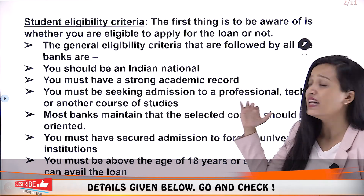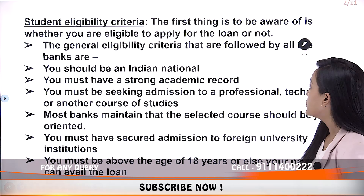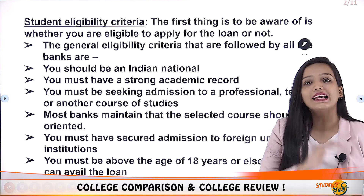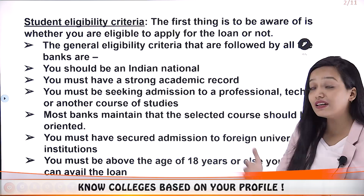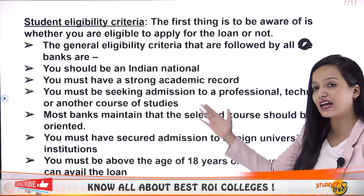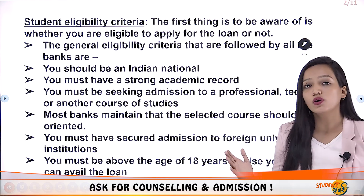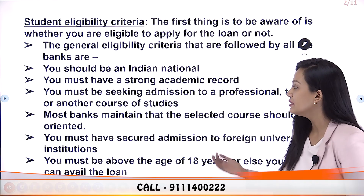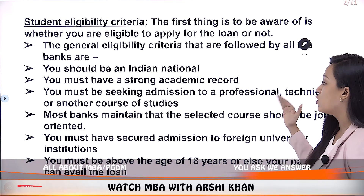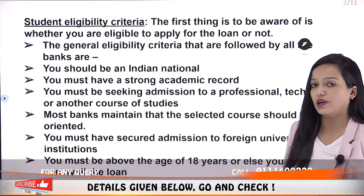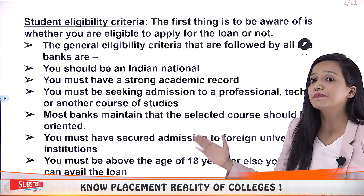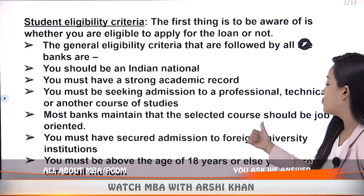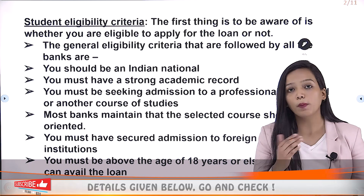The very first thing is student eligibility criteria. You need to understand whether you are eligible for loans or not. The general eligibility criteria is that you should be an Indian national, you must have a strong academic record, you must be seeking admission to a professional, technical, or any other course of studies. Most banks maintain that the selected course should be job-oriented. You must have secured admission to a foreign university — meaning you should have that admission letter to apply for the loan.